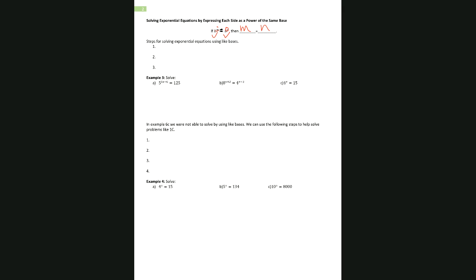We have 5 to the power 3x minus 6 equal to 125. Let's write down some powers to help identify like bases — powers of base 2: 2, 4, 8, 16, 32; powers of base 3: 3, 9, 27, 81; powers of base 5: 5, 25, 125. The first step is to rewrite the numbers using the same base. We can see that 5 and 125 can both be written as powers of 5: 125 is 5 to the third power.